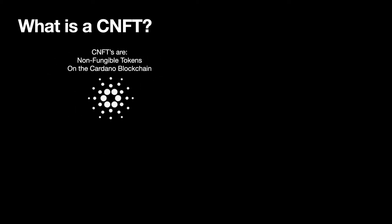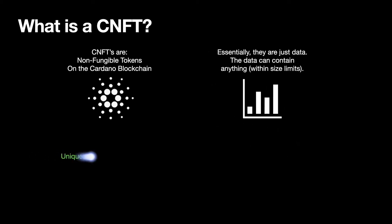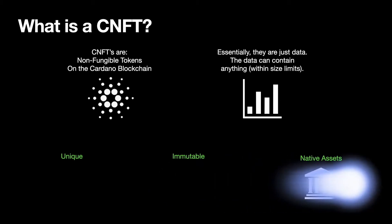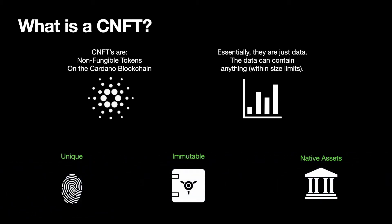So what is a CNFT? CNFTs are non-fungible tokens on the Cardano blockchain and essentially they're just some data that gets stored there. That data crucially can contain anything as long as it's within the size limits. They're unique, immutable — which means they can't be edited — and they're native assets, which means they're supported instinctively by the programming language Cardano is written in, making them just like any other token on that blockchain.